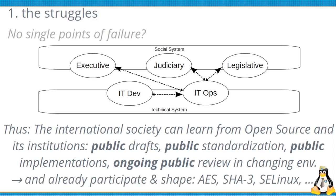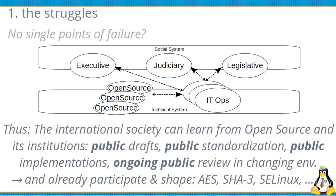We already have examples like the Advanced Encryption Standard, SHA-3, and Security-Enhanced Linux, where public agencies or publicly strongly influenced agencies — like the Internet Engineering Task Force and the National Institute of Standards and Technology — strongly interact with open source and possess open source institutions. They have adopted public drafts and public standardization. So we see that open source and international society are not simply two separate entities; it's the institutions that make up what we are up against. There are public agencies and publicly strongly influenced entities that are already part of the open source system, and many implementations already exist using and supporting open source and publicly reviewed systems like Linux.